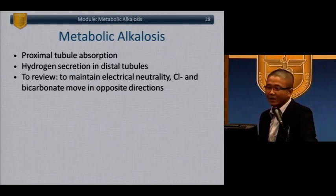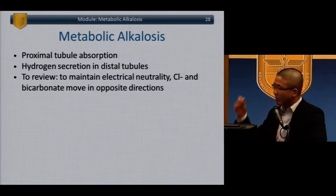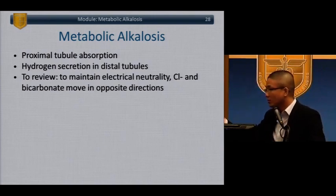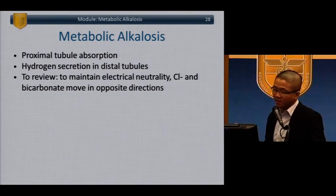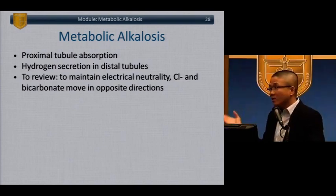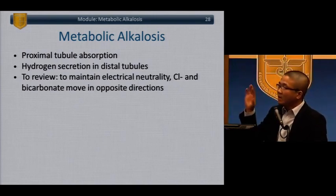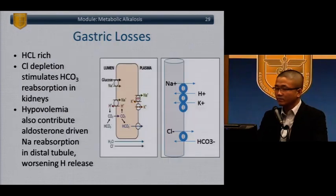Metabolic alkalosis: most bicarb is reabsorbed in the proximal tubule — also the point of significant bicarb loss in renal failure patients. Hydrogen secretion happens in the distal tubules to maintain electrical neutrality. Chloride and bicarb move in opposite directions — when bicarb goes down, chloride comes up, maintaining electrical neutrality. Gastric losses — the classic NG tube suctioning patient or one who's been vomiting a lot — stomach juices are high in hydrochloric acid.